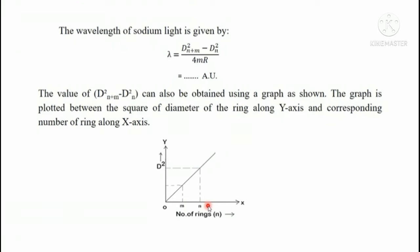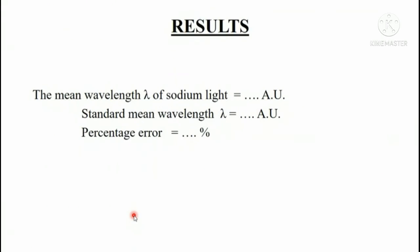This difference of the squares can also be obtained from the graph as shown. The graph is plotted for the number of rings versus d². We can take any value of m and then find out the difference as shown in the graph to get d²ₙ₊ₘ - d²ₙ, substitute the value in the formula and we can get the value of λ. We can report our results as the mean wavelength of sodium light is obtained.